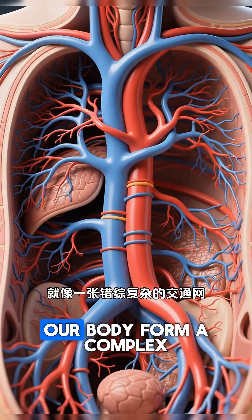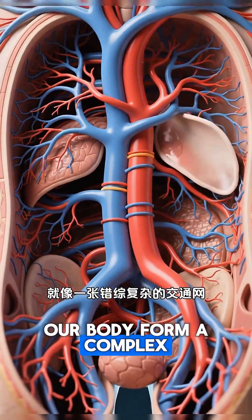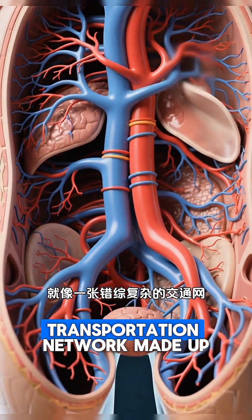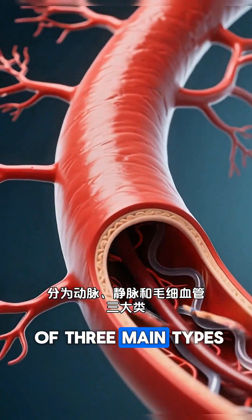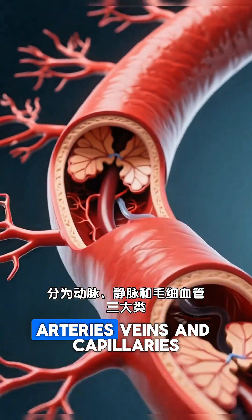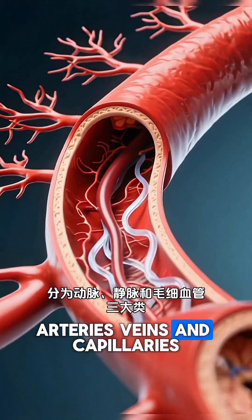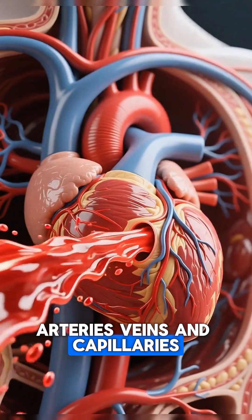The blood vessels in our body form a complex transportation network made up of three main types: arteries, veins, and capillaries.